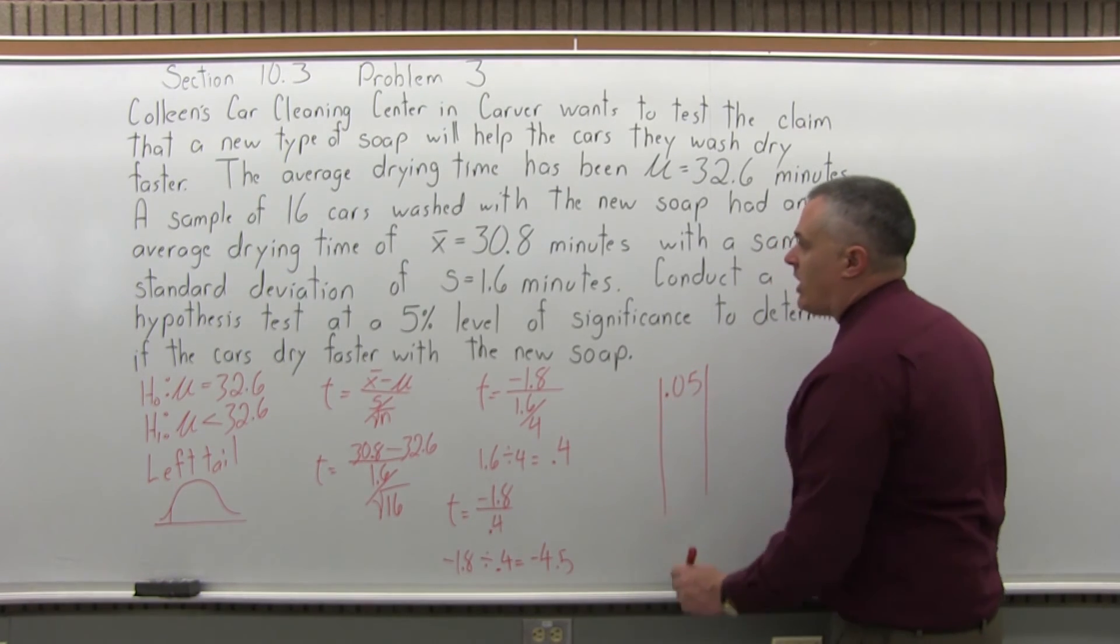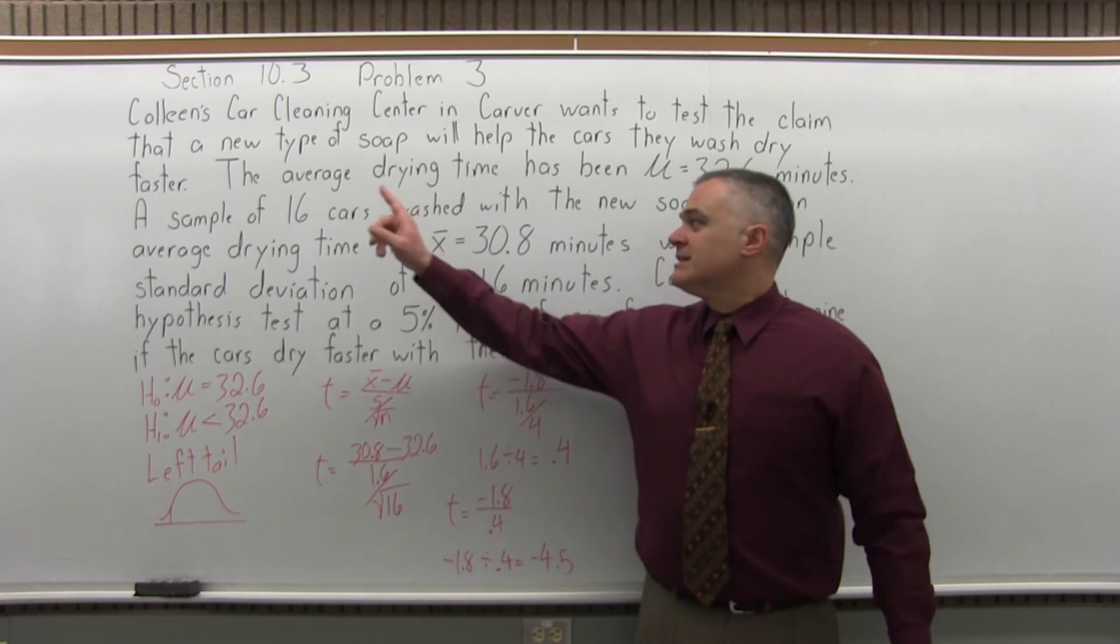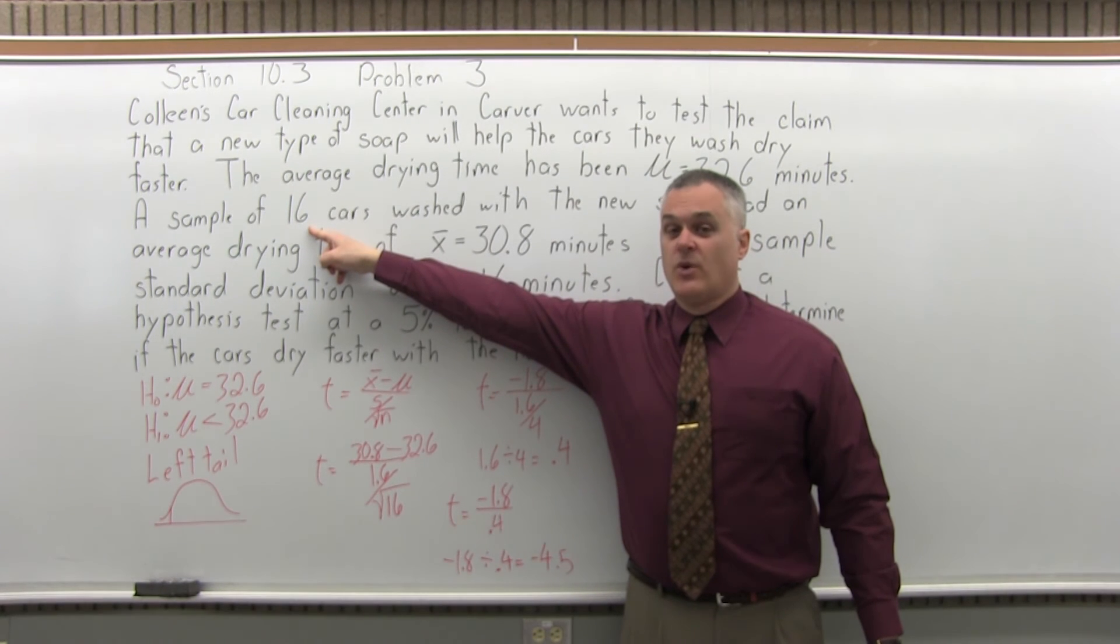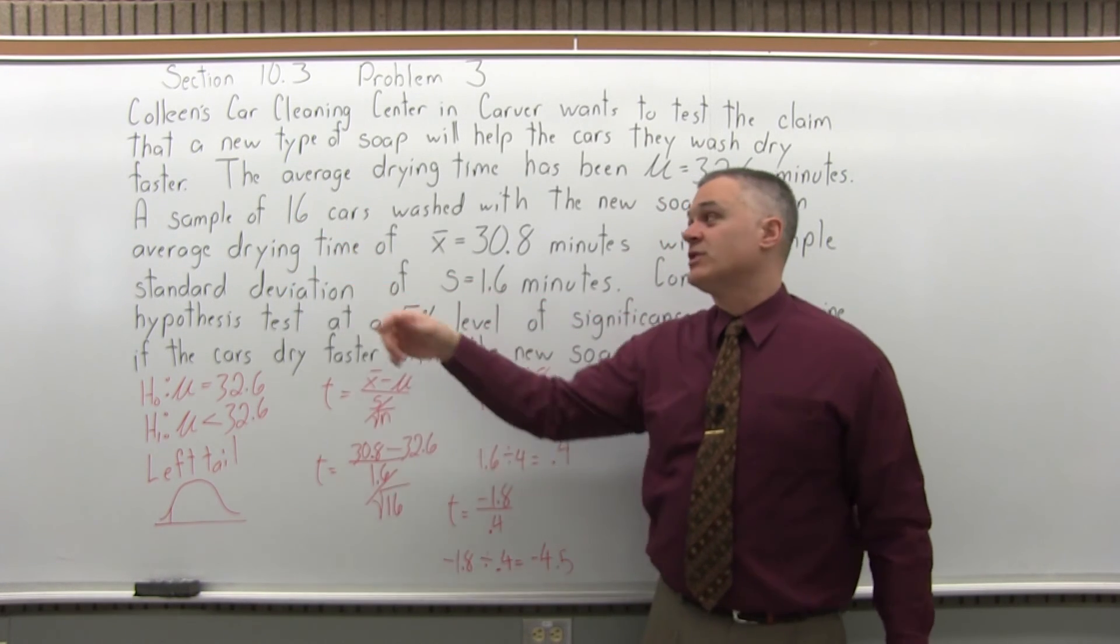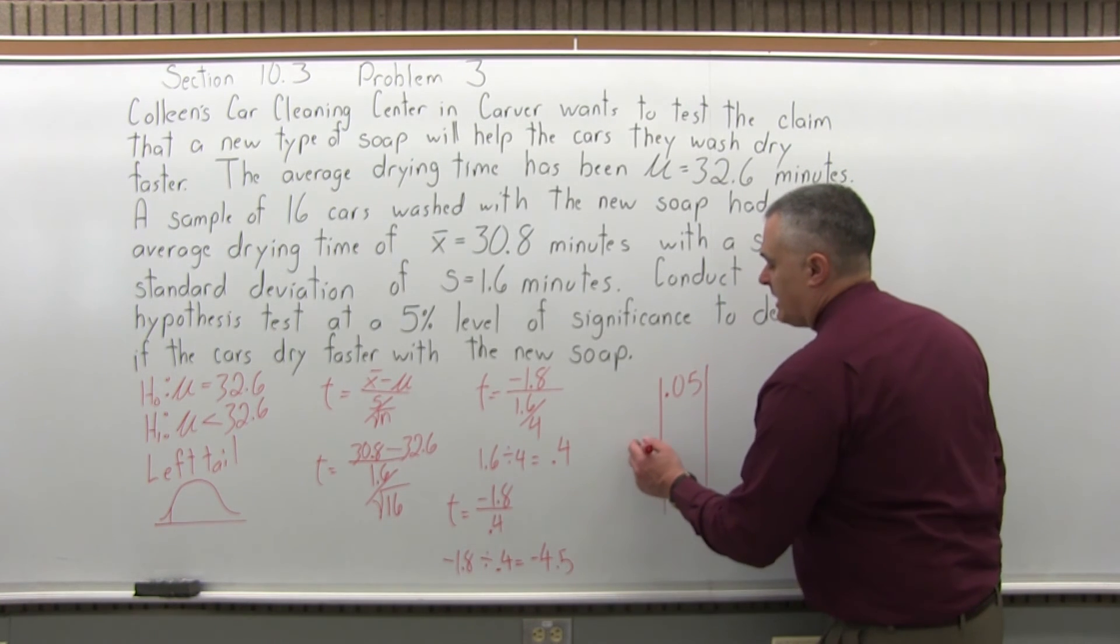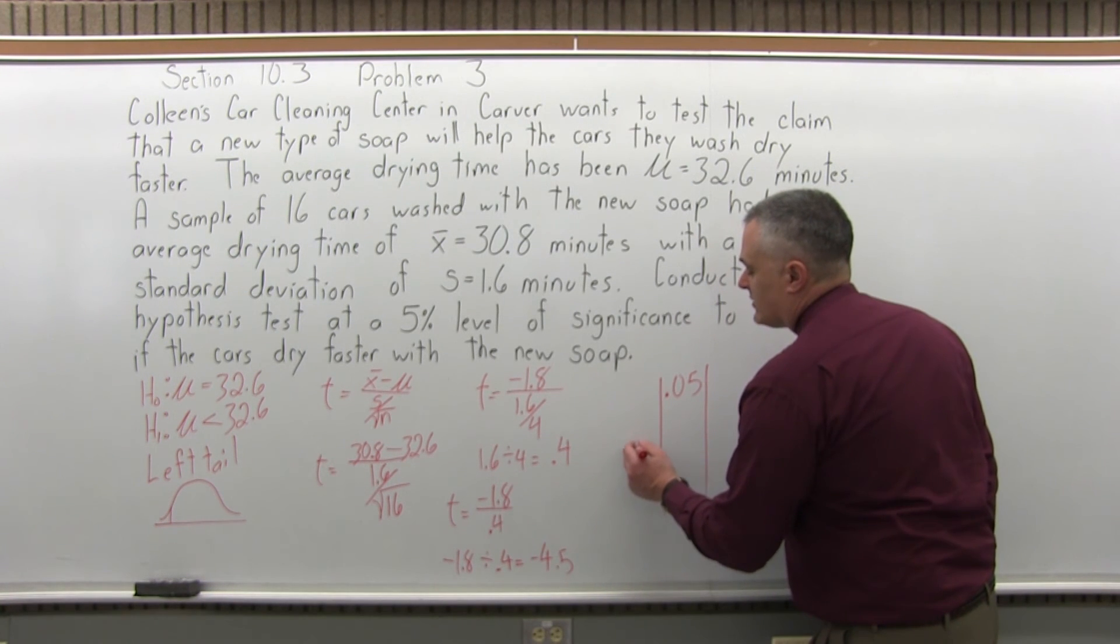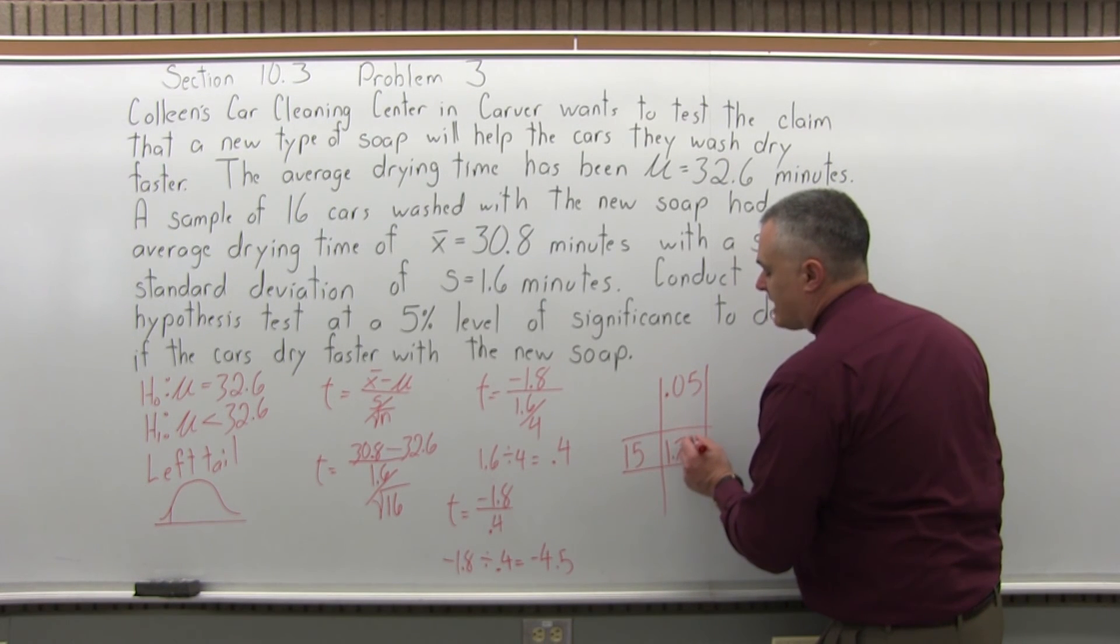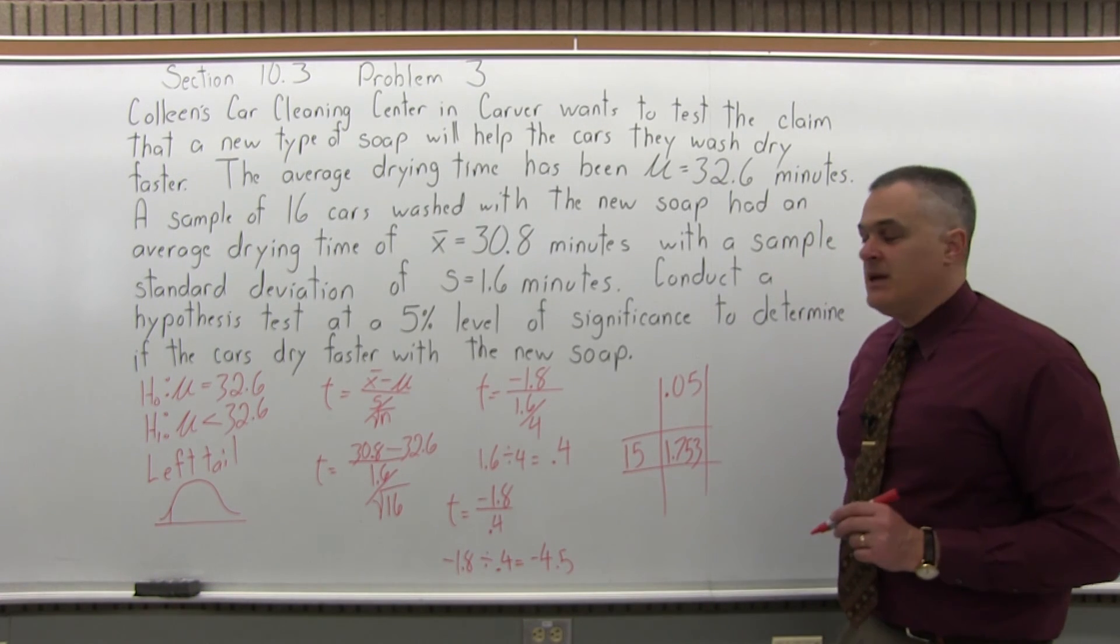And the row we want will be one less than the size of the sample. Our sample has 16 items in it. So, the row we want in the T chart is 15, one less. That's what they call the number of degrees of freedom. The column is labeled DF and degrees of freedom. And you want to look in the 15 degrees of freedom row, intersected with the 0.05 column. And you'll see it intersects at 1.753.